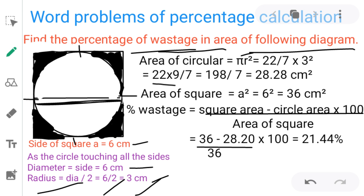22 by 7 into 9, so 9 into 22 we get 198 divided by 7, we get 28.28 cm² is the area of circle.